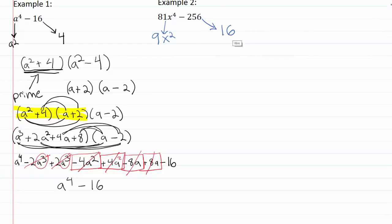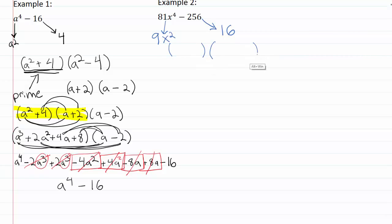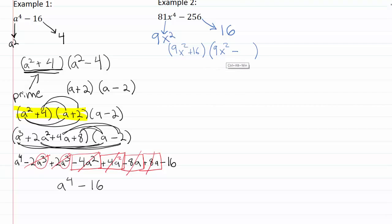You can double check that sixteen times sixteen gives you two fifty-six — it's a number worth watching for. So now we apply our difference of squares rule: we're going to have the square roots added together and the square roots subtracted.